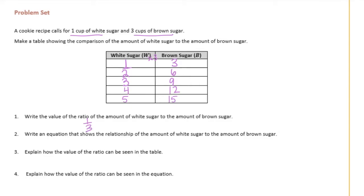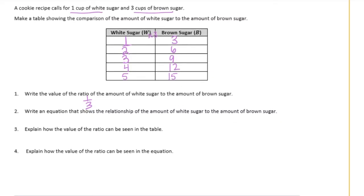Write an equation that shows the relationship of the amount of white sugar to the amount of brown sugar. There are multiple equations we could write, but I'm going to say that the brown sugar is equal to the white sugar times three — so we could write three w. Or if we wanted to write it in terms of the white sugar, we could say white sugar is equal to one-third of the brown sugar.